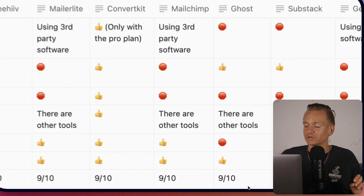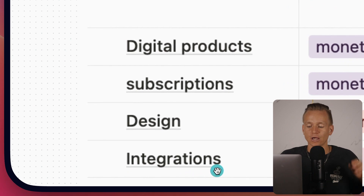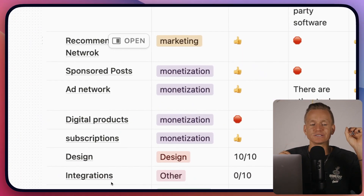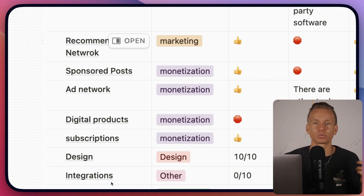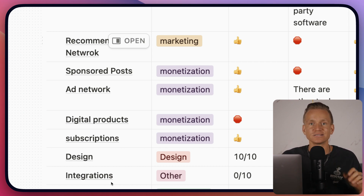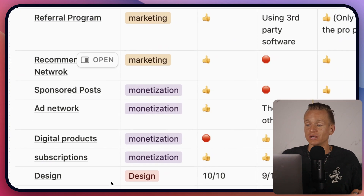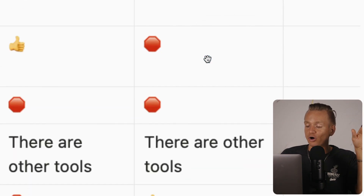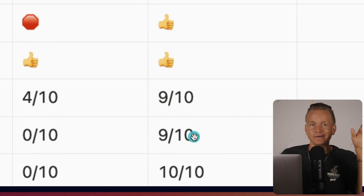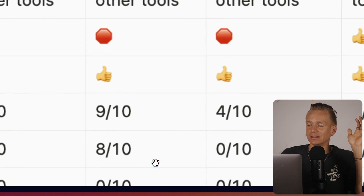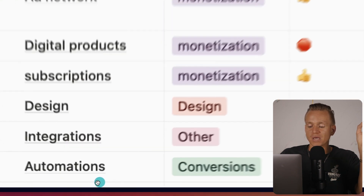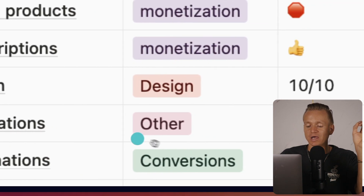Next is integrations. This matters because if you're using other tools — for example, a Shopify store, a WordPress website, or specific tools for conversions and running ads — you'll need integrations, especially if you want to build a really big business. GetResponse has a ton of different integrations: 9 out of 10. Ghost has a surprisingly decent amount of integrations: 8 out of 10, though it's lacking a little bit.